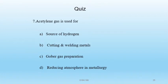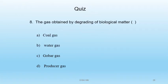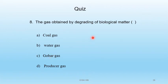Question 11 — Acetylene gas is used for: A) source of hydrogen, B) cutting and welding metals, C) gobar gas preparation, D) reducing atmosphere in metallurgy. Acetylene gas is used for cutting and welding metals. B is the correct answer. Question 12 — The gas obtained by degrading biological matter is gobar gas. C is the correct answer.